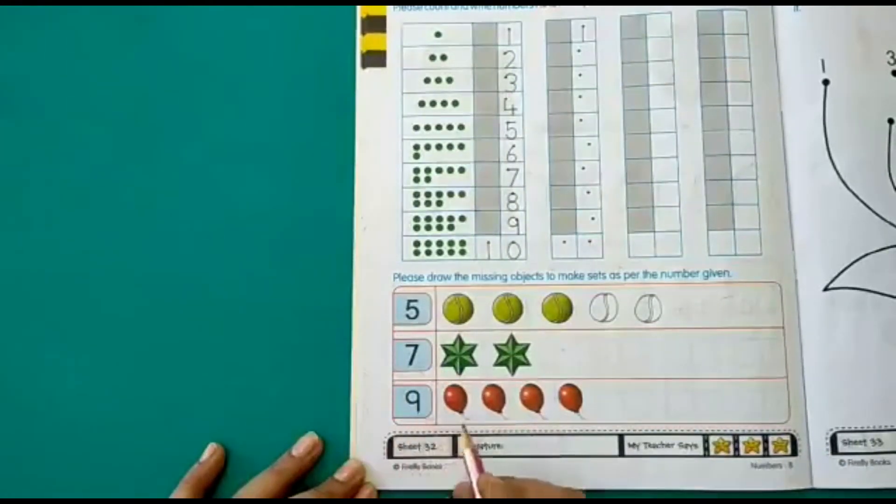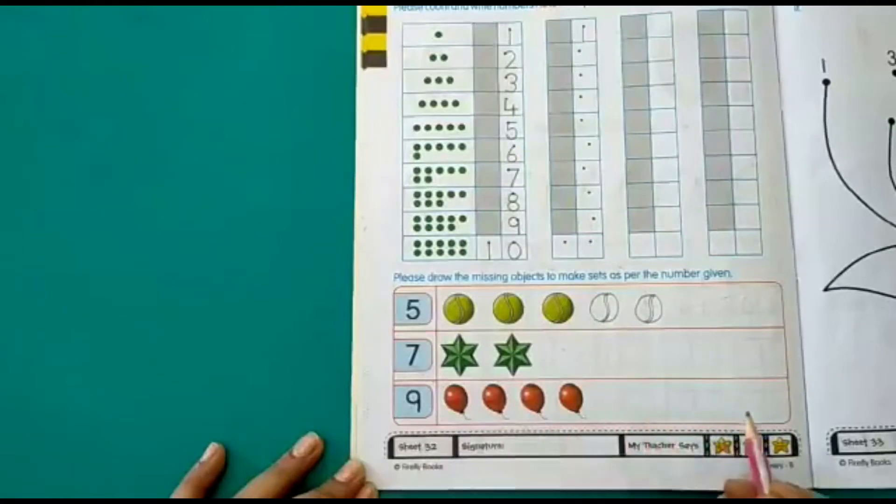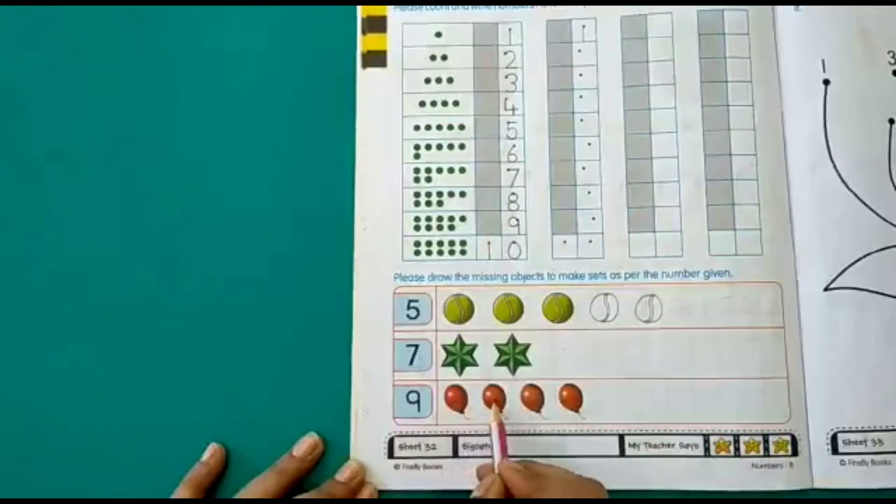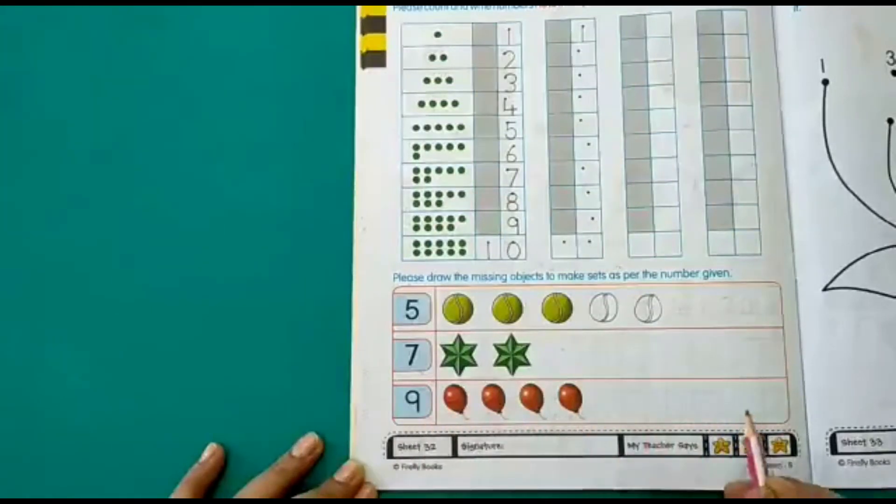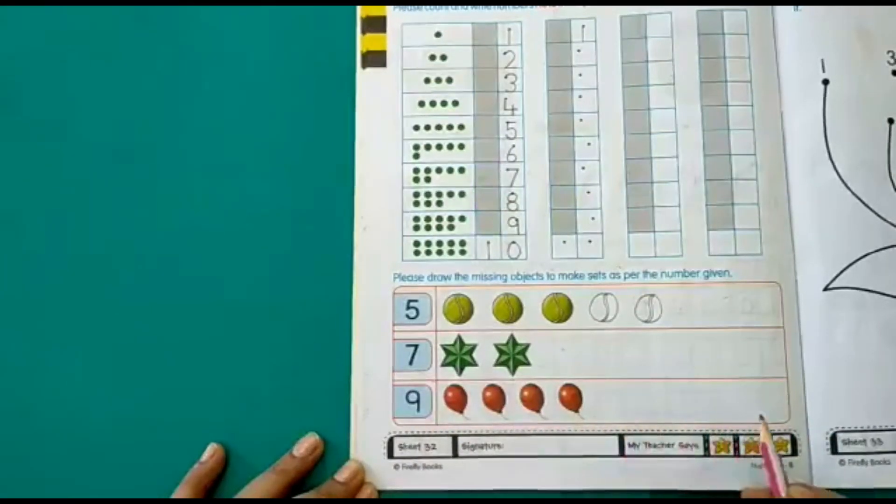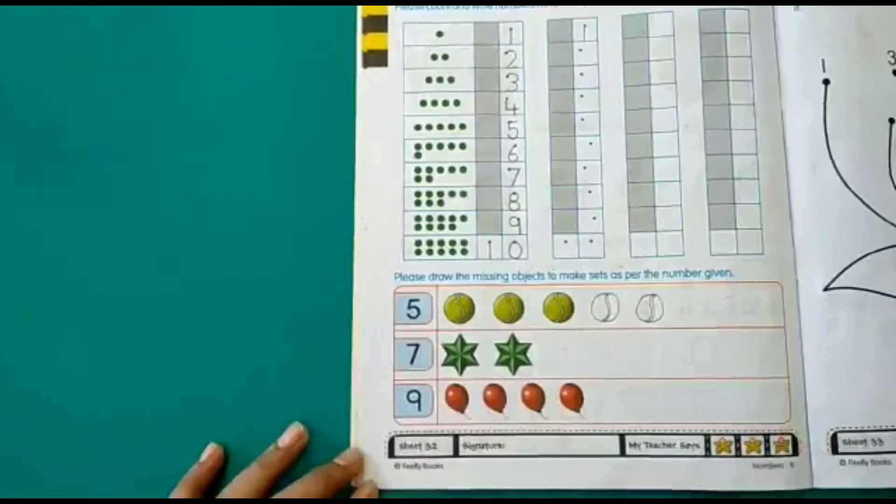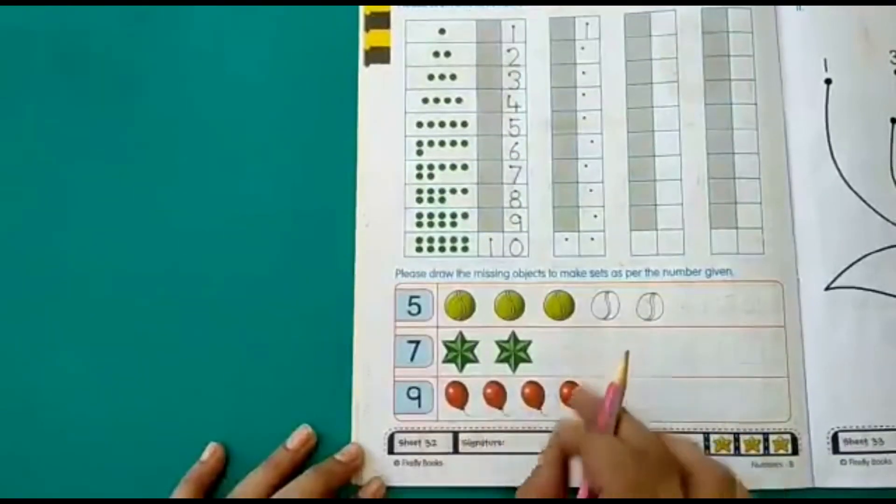Same with number 9. You have to draw 9 balloons. There are only 1, 2, 3, 4 balloons here. And the number here is 9. So you have to count and draw till you get 9 balloons. So this is your activity on page number 32.